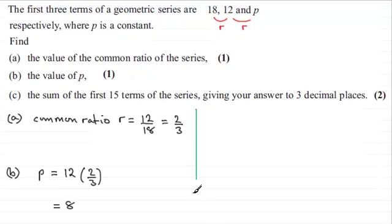Now, for the final part, part c, what we've got to do here is to find the sum of the first 15 terms of the series, giving you answer to three decimal places. Well, for a geometric series, we should be familiar with the formula that the sum of the first n terms is given by the first term, which we call a, multiplied by 1 minus the common ratio to the power n, and all of this is divided by 1 minus r.